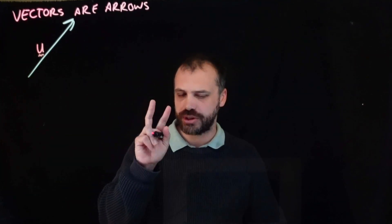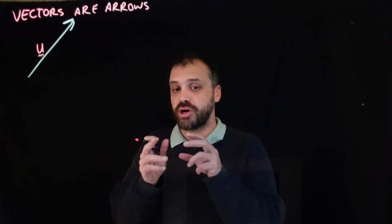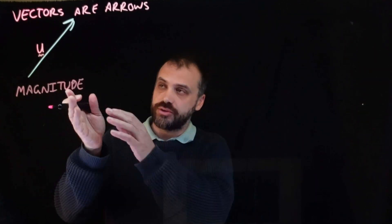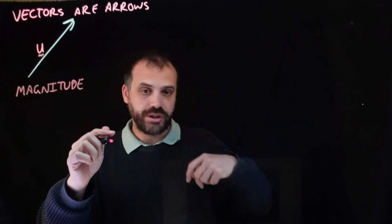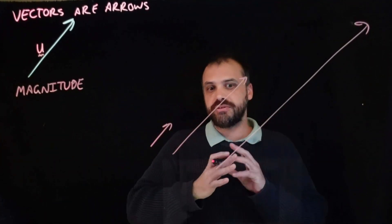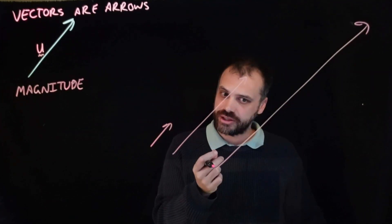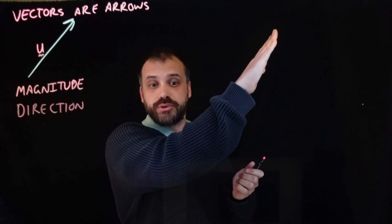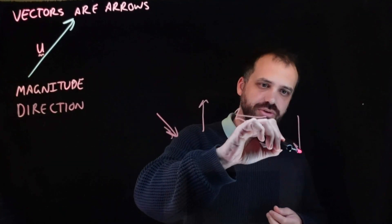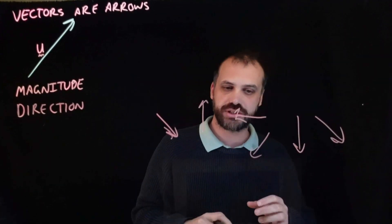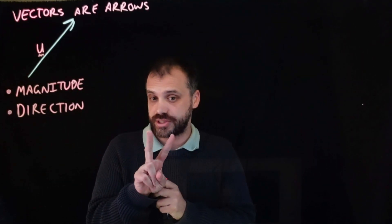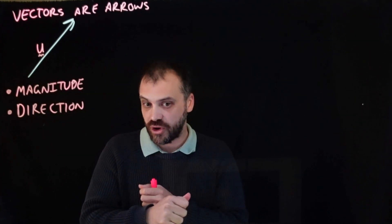Now a vector has two important properties. Every vector is defined by two properties. The first property is magnitude — how long a vector is. You could end up with a shorter vector or a longer vector. The other property is direction. So this vector is going upwards — we can have vectors that go in all sorts of directions. These two characteristics, and only these two characteristics, are what define a vector.